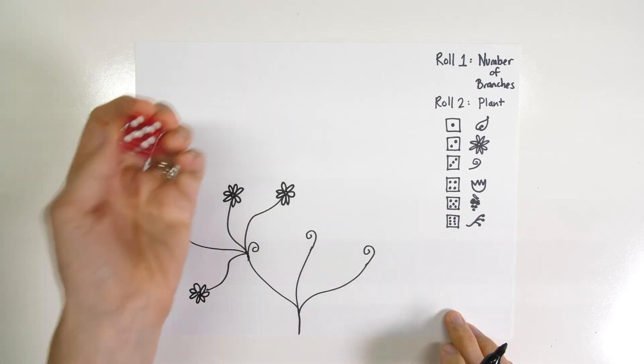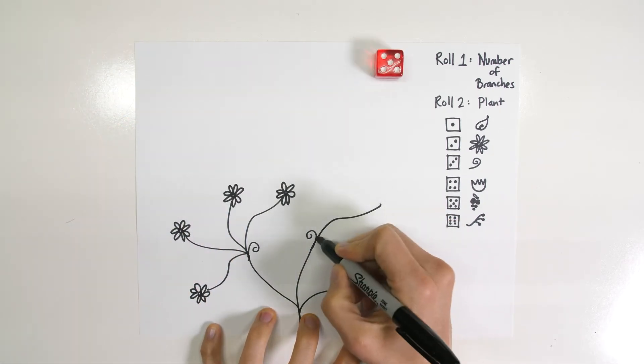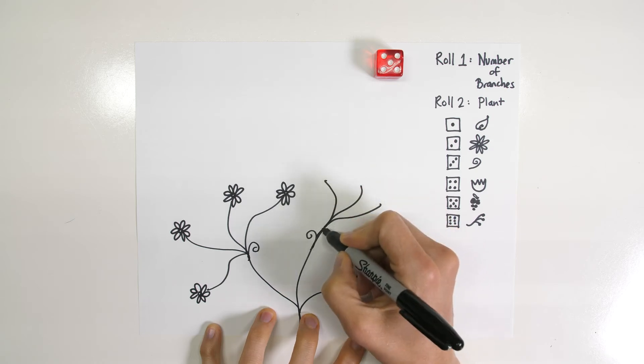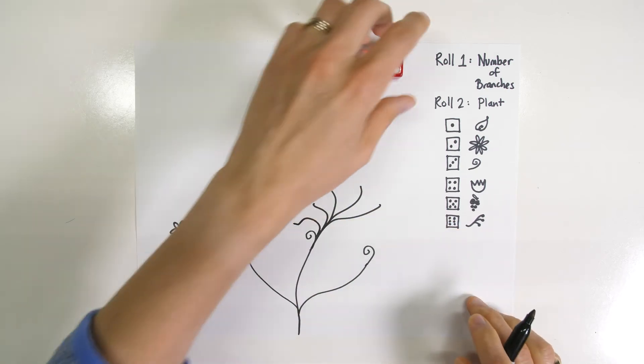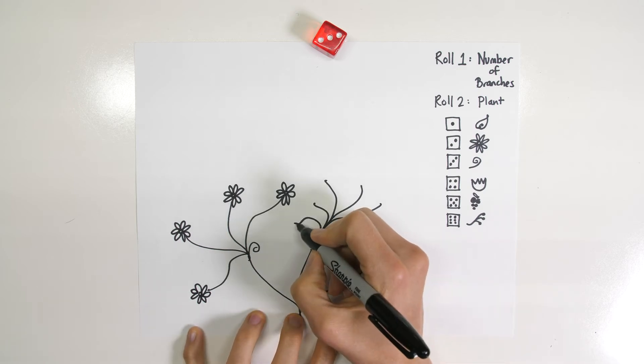All right, let's see how many branches off of this middle one. Five. And the kind of plant will be spirals again.